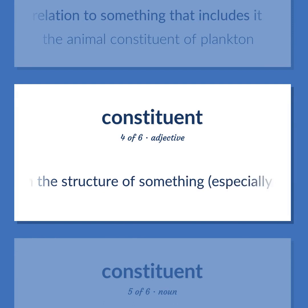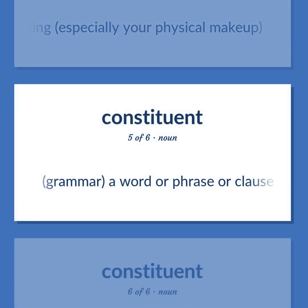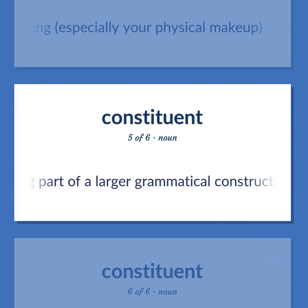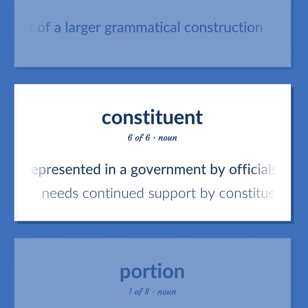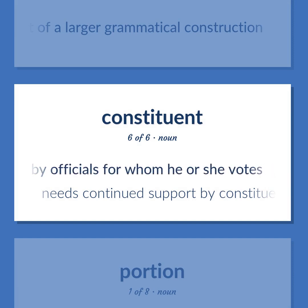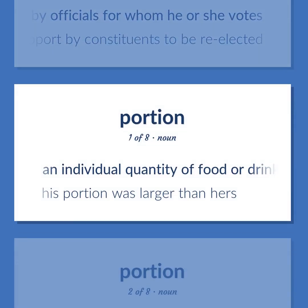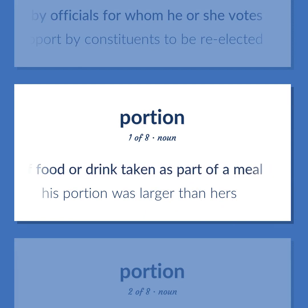Constitutional in the structure of something, especially your physical makeup. Grammar: a word or phrase or clause forming part of a larger grammatical construction. A member of a constituency; a citizen who is represented in a government by officials for whom he or she votes — needs continued support by constituents to be re-elected. An individual quantity of food or drink taken as part of a meal — his portion was larger than hers.